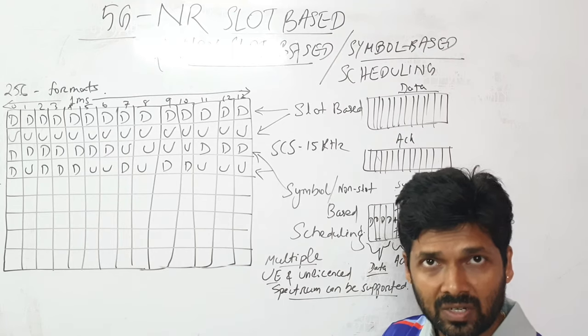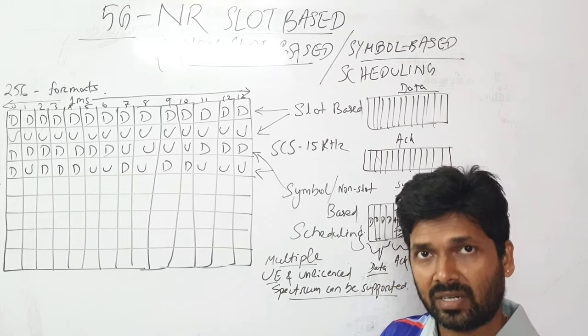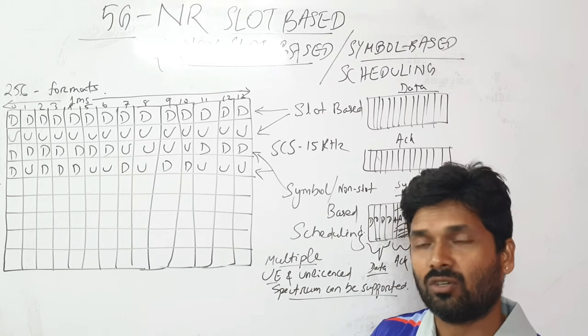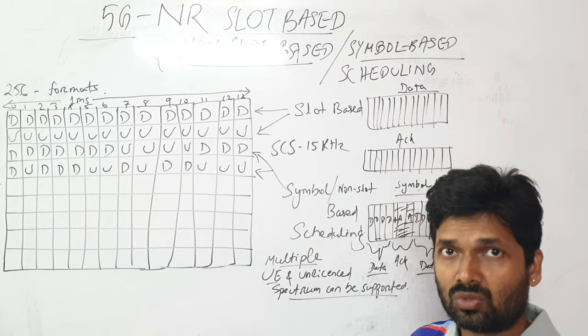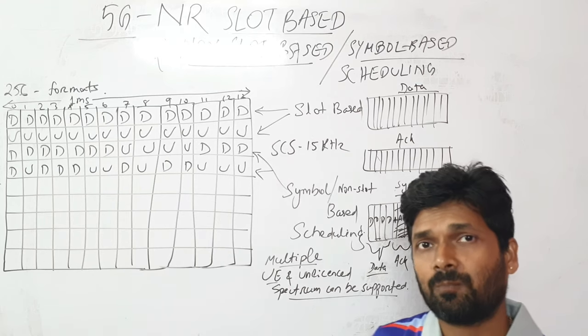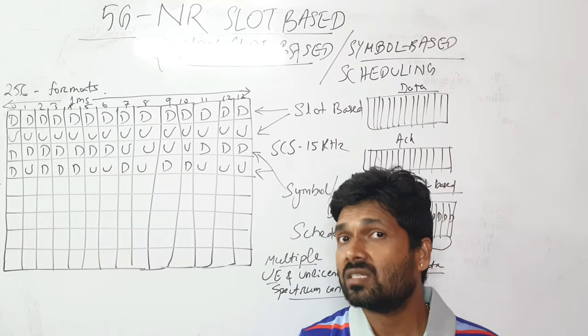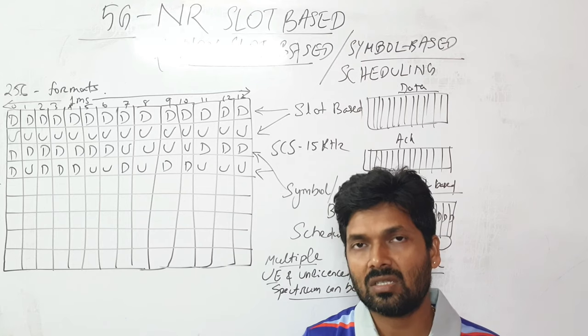Multiple UEs can be addressed, whether it's sending data or sending some synchronization or broadcasting information. We can do that. And then the third one is if we go for non-licensed spectrum or any urgency or any puncturing in between the slots and sending some important information to particular UEs.